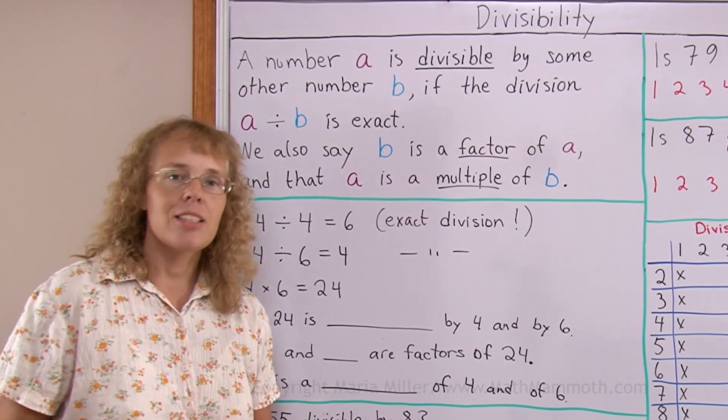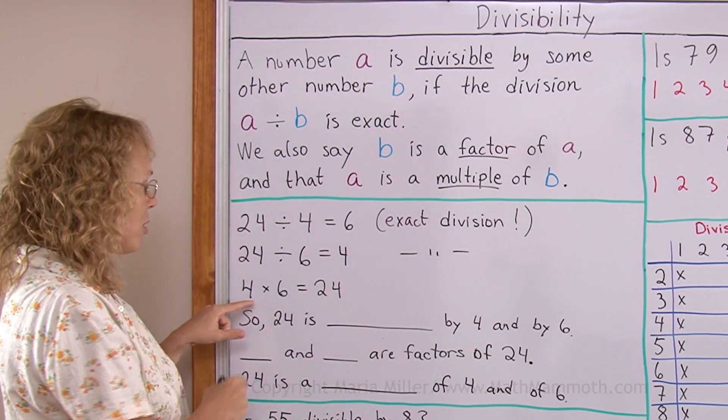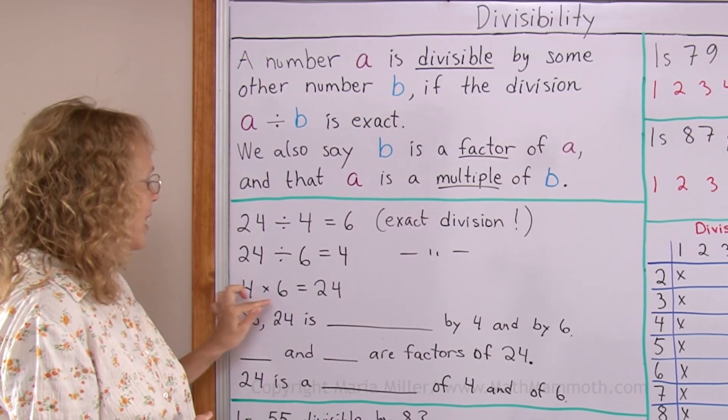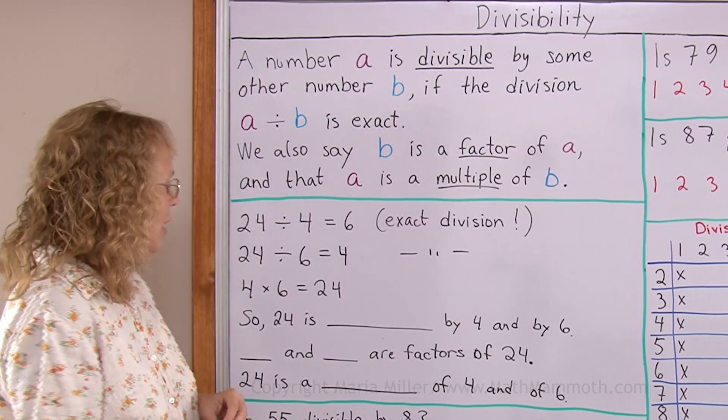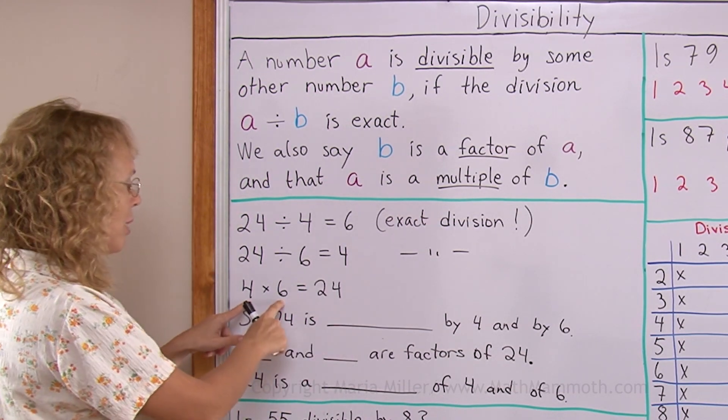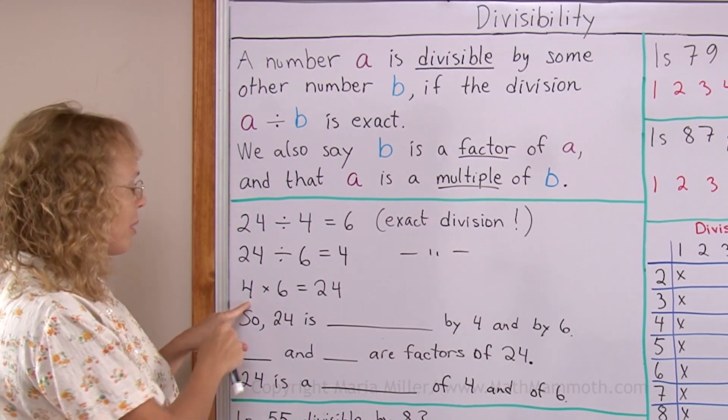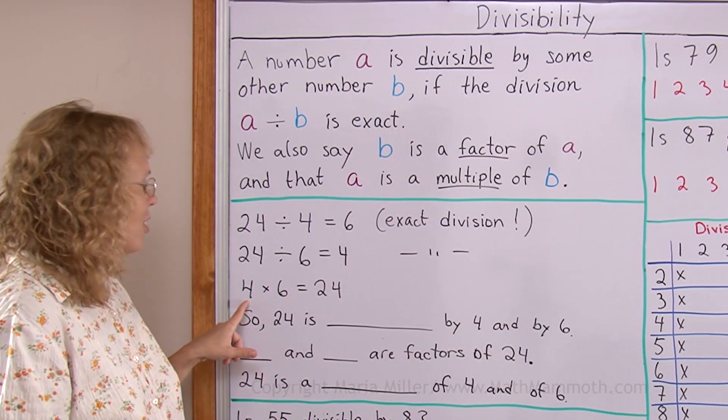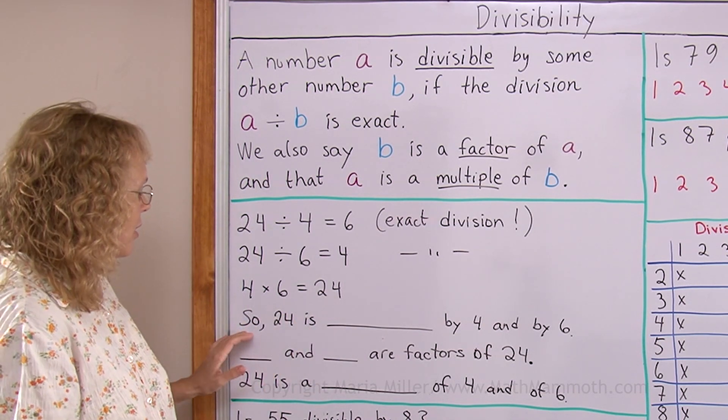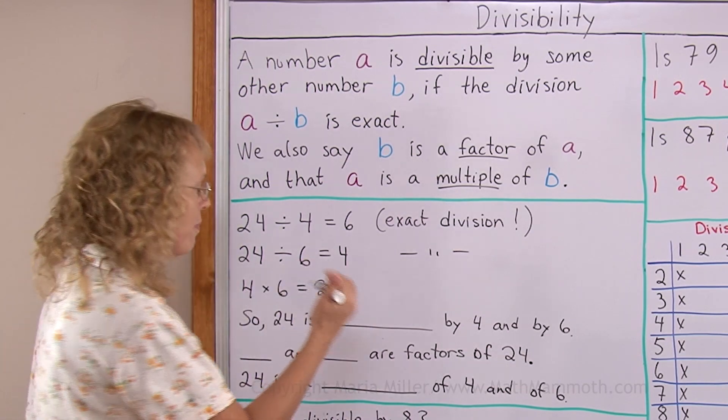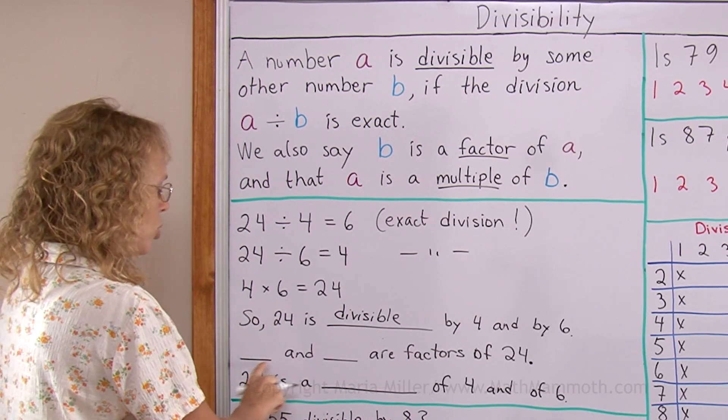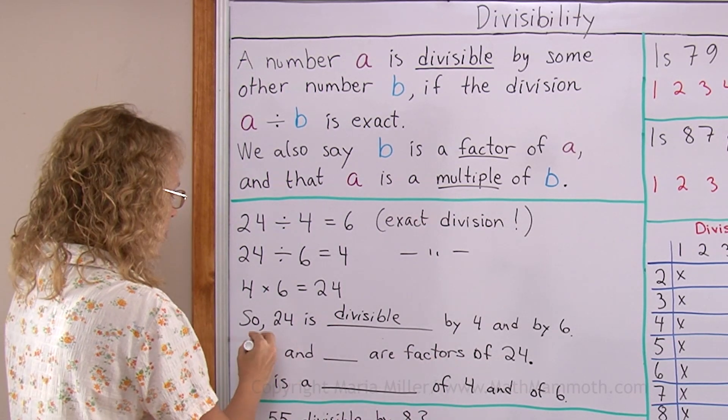And since that is the case we can write a multiplication 4 times 6 equals 24. And from that we can learn that 4 and 6 are factors of 24. You may remember that in a multiplication like this, the numbers you multiply are called factors, and specifically they are factors of 24. 4 is a factor of 24 and so is 6. So when we fill this in, 24 is divisible by 4 and by 6. And then two numbers here are factors of 24: 4 and 6.